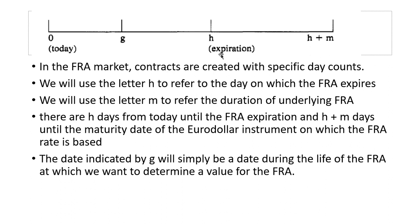In the FRA market, contracts are created with specific day counts. We use the letter H to refer to the day on which the FRA expires, and M to refer to the duration of the underlying FRA. There are H days from today until FRA expiration, and H plus M days until the maturity of the LIBOR instrument on which the FRA is based. G is any day between zero and H, previously noted as small t, and we calculate the value of the forward contract at any day G.